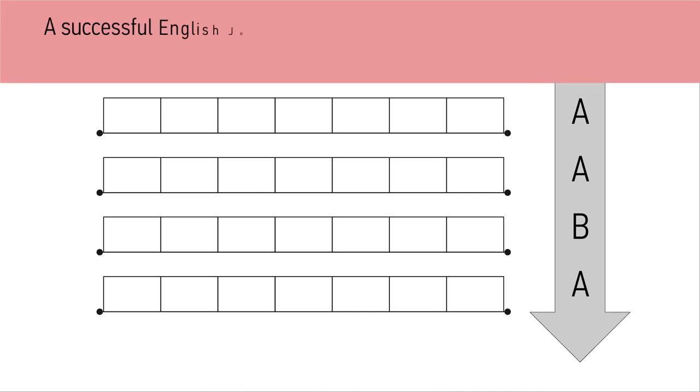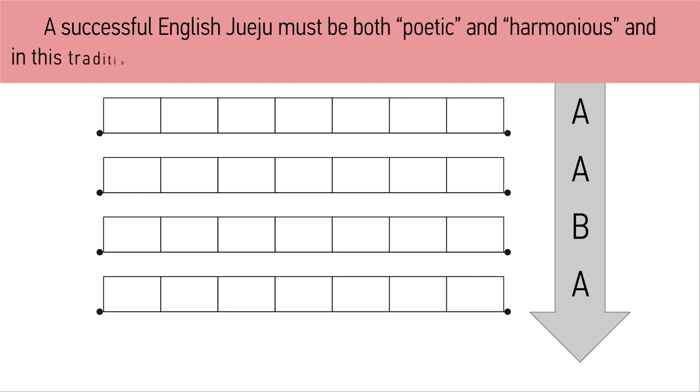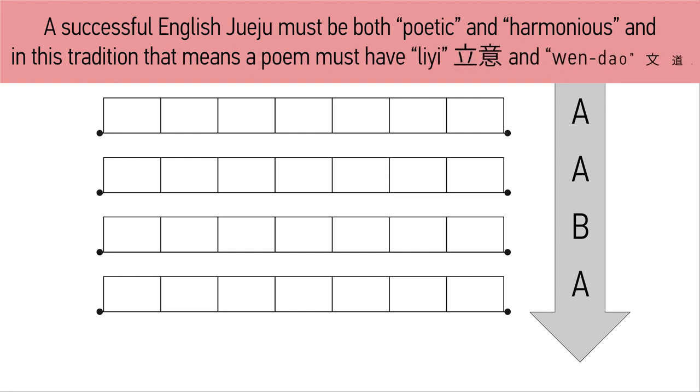A successful English Jueju must be both poetic and harmonious, and in this tradition, that means a poem must have Li Yi as well as Wen Dao.